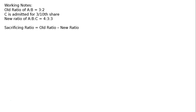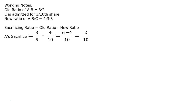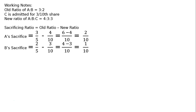Sacrificing ratio equals old ratio minus new ratio. A's sacrifice: 3/5 minus 4/10. LCM is 10, giving 6/10 minus 4/10 equals 2/10. B's sacrifice: 2/5 minus 3/10 equals 4/10 minus 3/10 equals 1/10. Therefore, sacrificing ratio of A to B is 2 to 1.